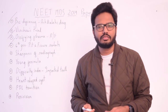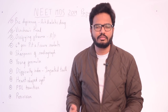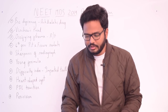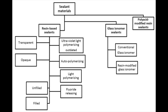Moving on to pit and fissure sealants generations. The first generation is UV light cured, the second generation is chemical cured or self-cured, the third generation is visible light cured, and the fourth generation is fluoride releasing.